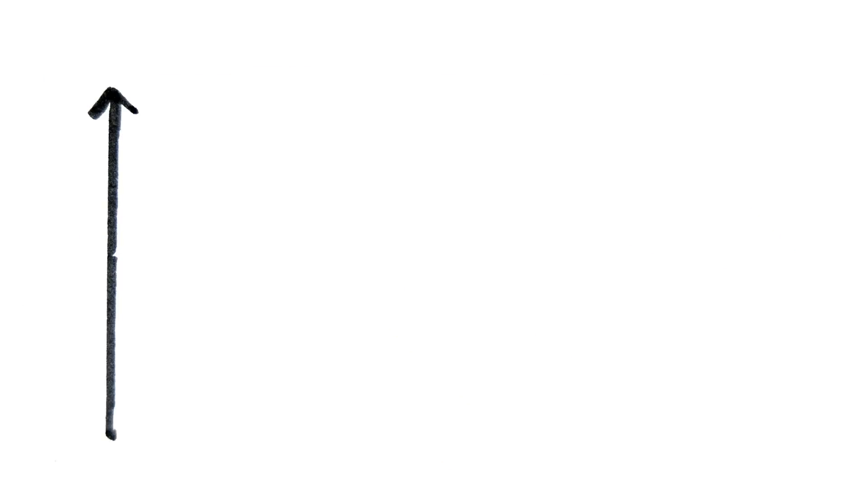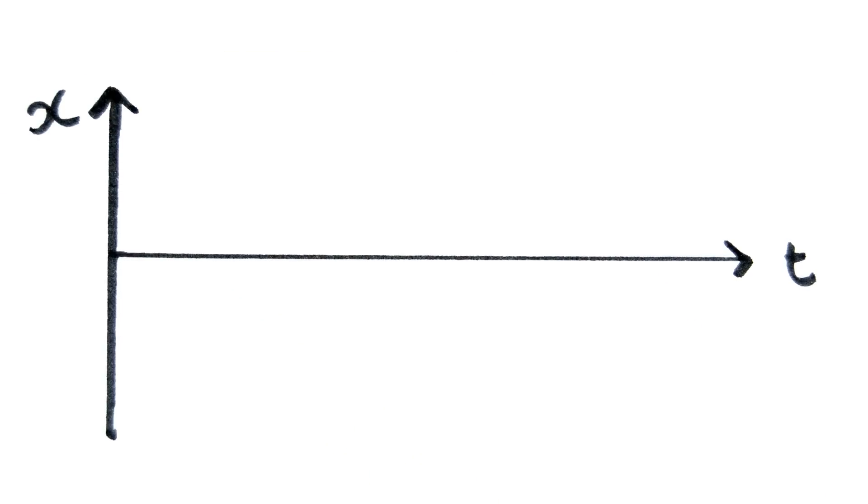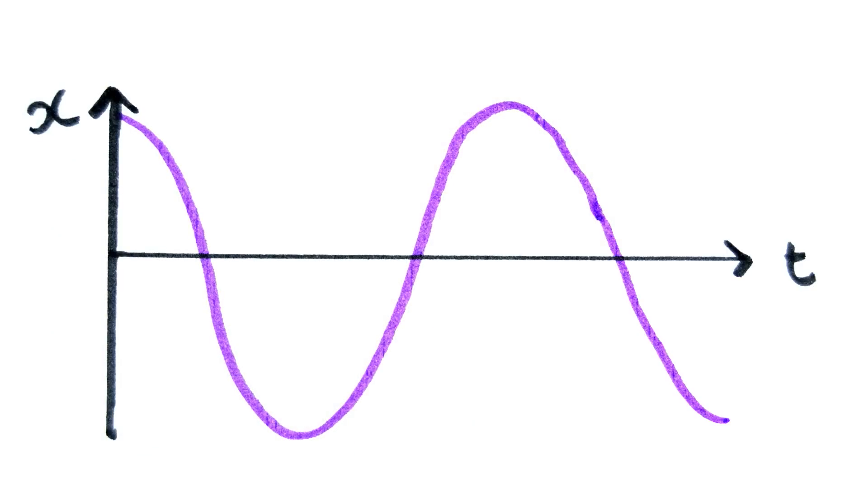If you were to plot a graph of displacement against time for this pendulum, it would look like this. You can work out what the velocity time graph would look like by thinking about what the velocity would be at key points.